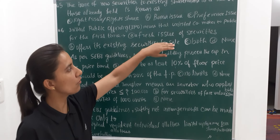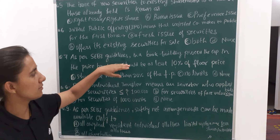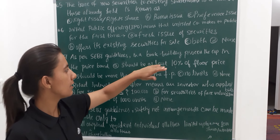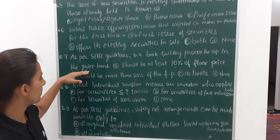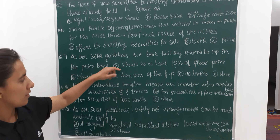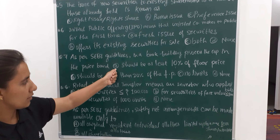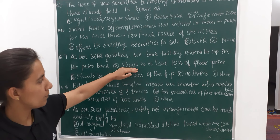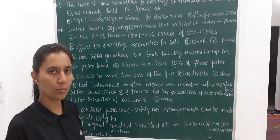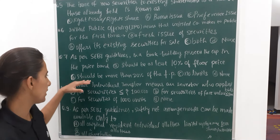Seventh question: as per SEBI guidelines in a book building process the cap in the price band — A option is it should be at least 10 percent of floor price, B is should...